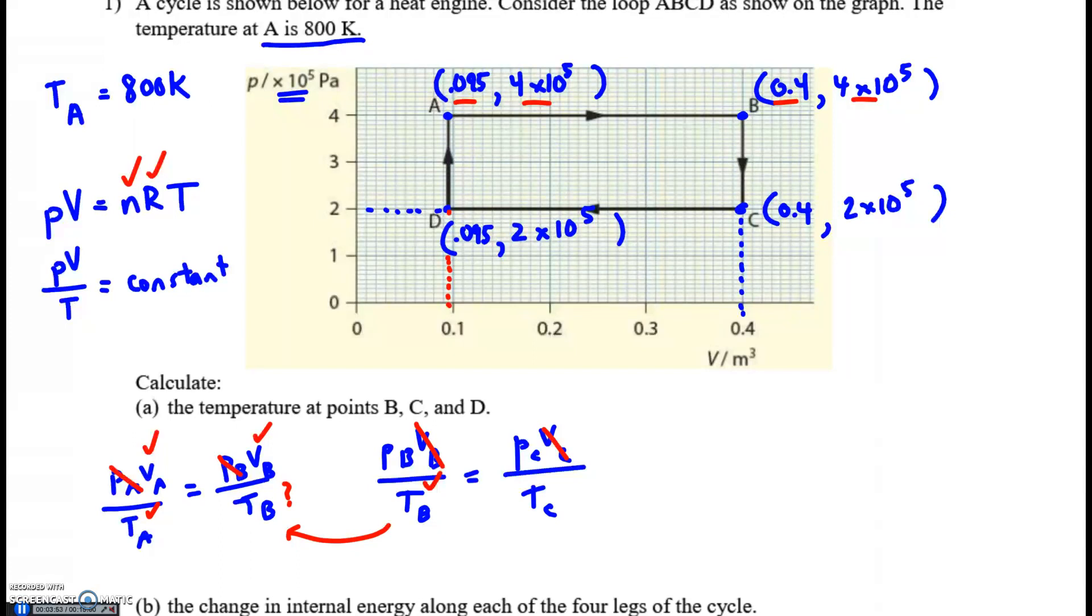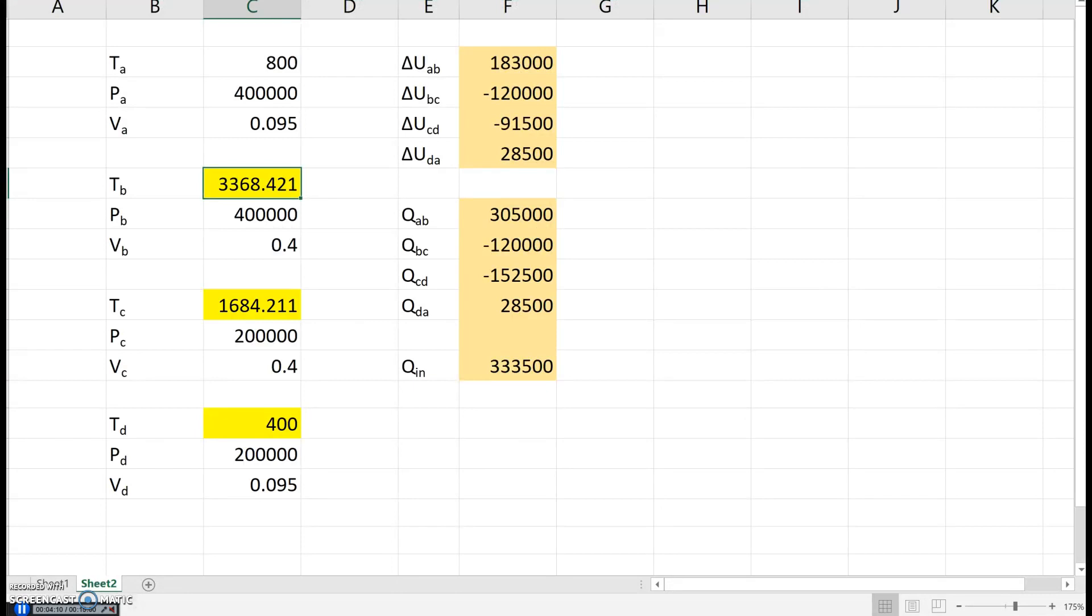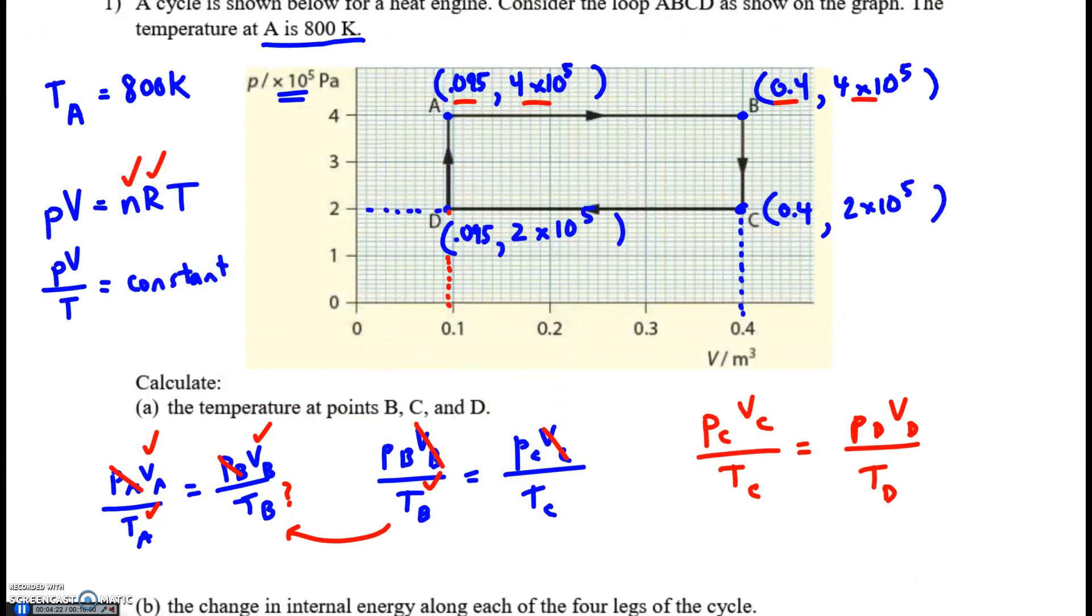And you do this finally at point D, choosing to equate pressure at C times volume at C over T_C equals pressure at D times volume at D over T_D. Here are the answers you get. The temperature at B, temperature at C, and the temperature at D. This is using 0.095 as the volume.